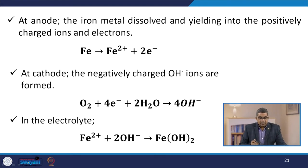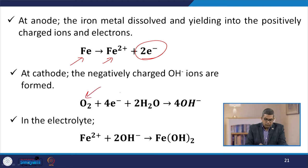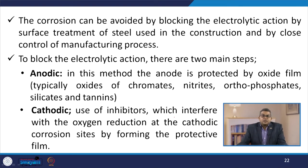At the anode, iron metal dissolves and yields positively charged iron ions and electrons: Fe → Fe²⁺ + 2e⁻. At the cathode, negatively charged OH⁻ ions are formed: O₂ + 4e⁻ + 2H₂O → 4OH⁻. In the electrolyte, Fe²⁺ and 2OH⁻ form Fe(OH)₂. Corrosion can be avoided by blocking the electrolytic action through surface treatment of steel used in construction and by close control of the manufacturing process.